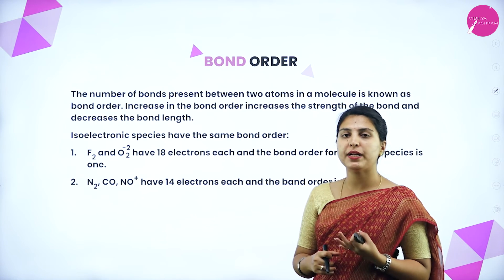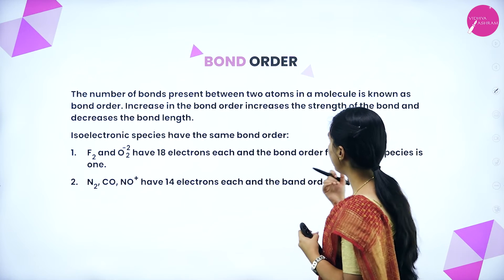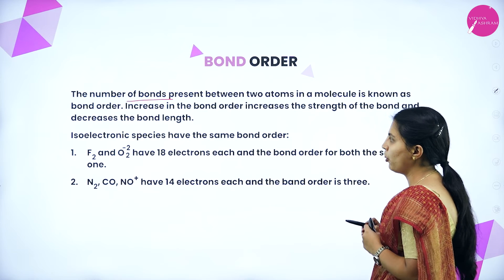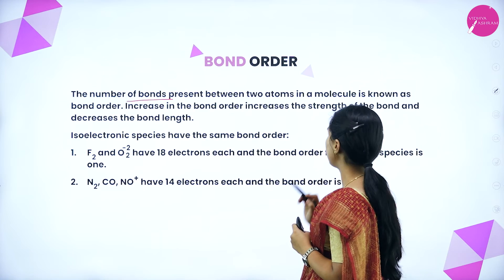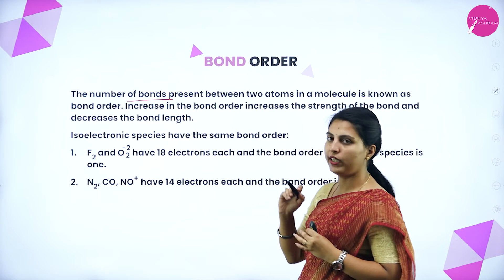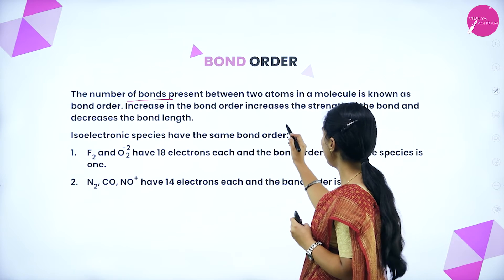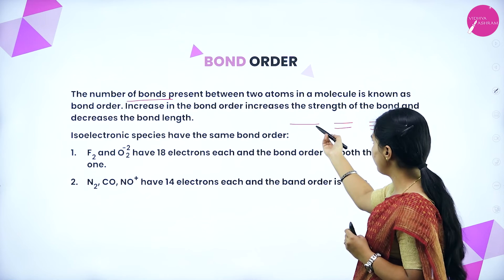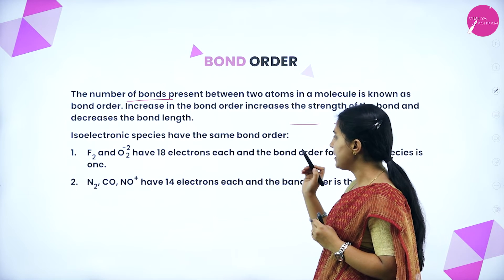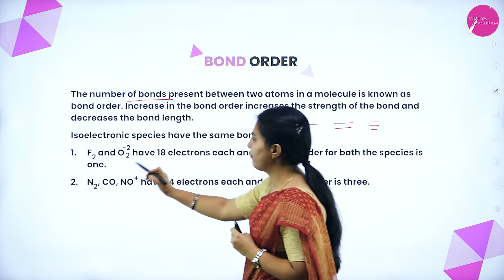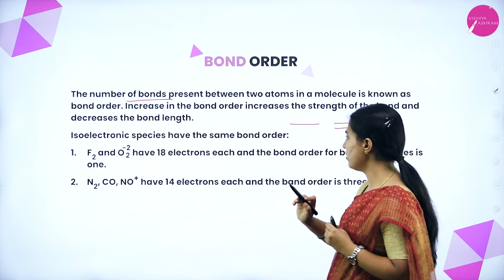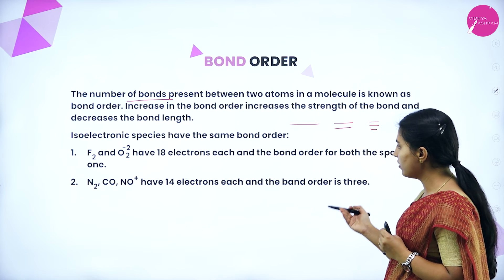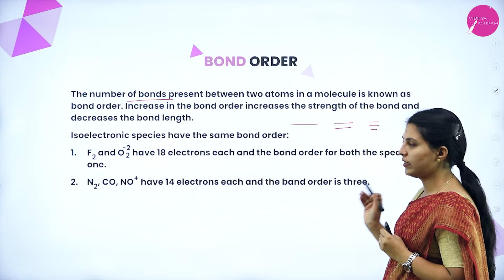Bond order is the number of bonds present between two atoms in a molecule. Increase in bond order increases the strength of the bond and decreases the bond length. Isoelectronic species have the same bond order: F₂ and O₂²⁻ have 18 electrons each and bond order 1; N₂, CO, and NO⁺ have 14 electrons each and bond order 3.